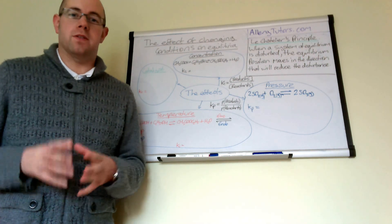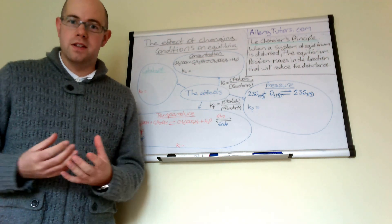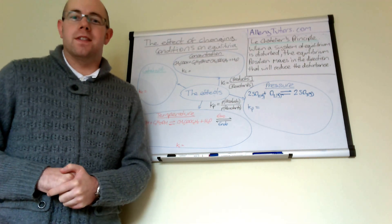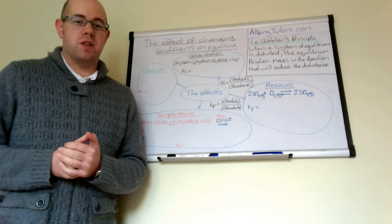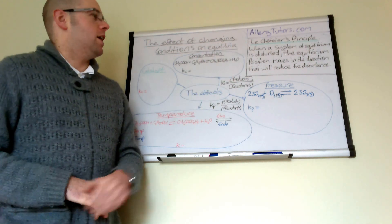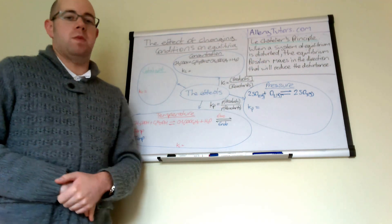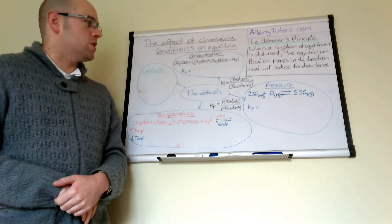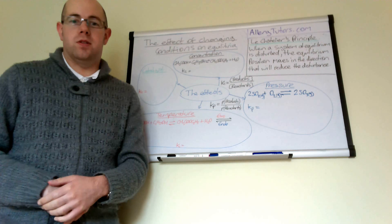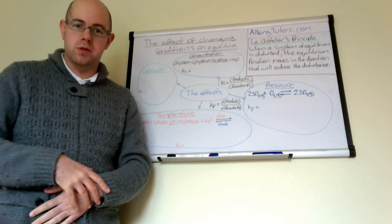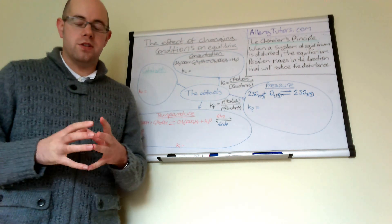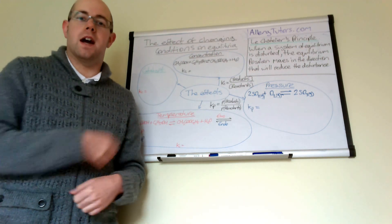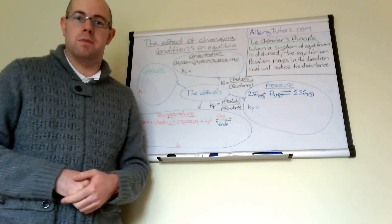The crucial person behind anything to do with equilibria is Le Chatelier, and you should know from AS Chemistry that Le Chatelier came up with a principle: when a system at equilibrium is disturbed or changed, the equilibrium position moves in the direction that will reduce or oppose that change. You need to know for A2 Chemistry what effect Le Chatelier's principle has on Kc and Kp.